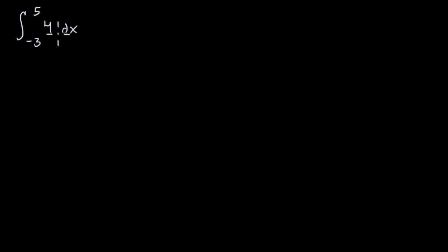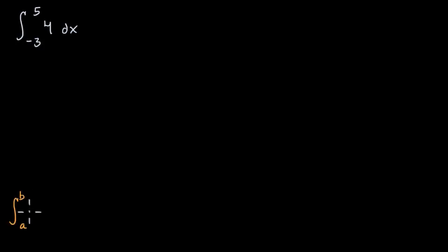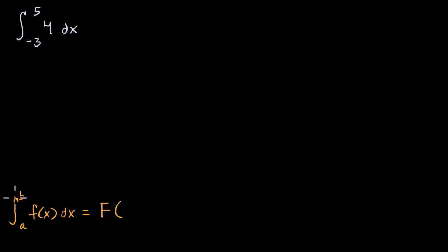In order to evaluate this, we need to remember the fundamental theorem of calculus, which connects the notion of a definite integral and an antiderivative. The fundamental theorem of calculus tells us that our definite integral from a to b of f of x dx is going to be equal to the antiderivative of our function f — which we denote with the capital F — evaluated at the upper bound, minus our antiderivative evaluated at the lower bound.